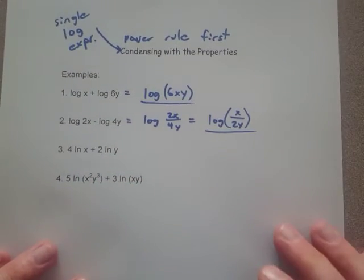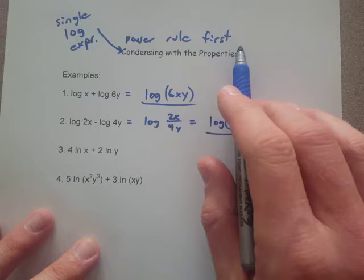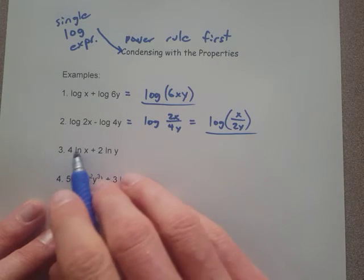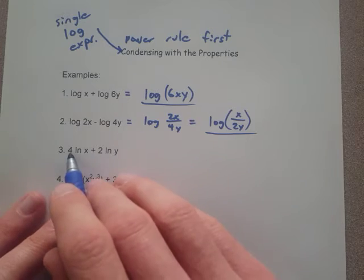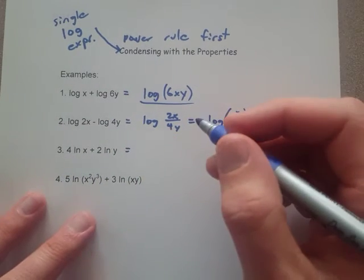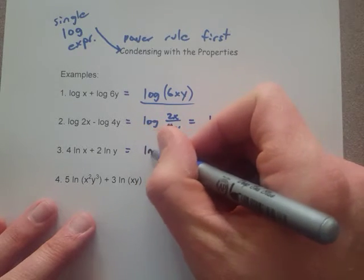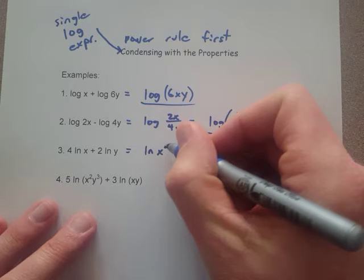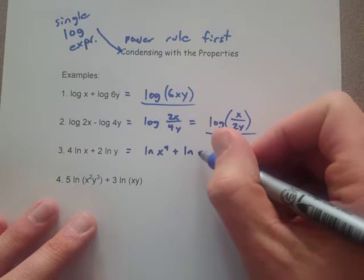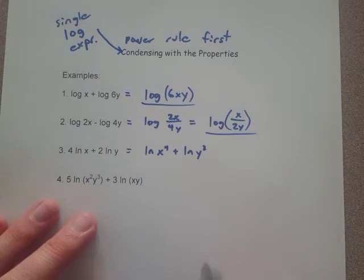Number 3. Again, use the power rule first. That's the key for condensing. So you'll notice that we've got a 4 and a 2 sitting out here in front. So we're going to put the 4 up on the x, we're going to put the 2 up on the y first. That's using the power rule first. So ln of x to the 4th plus ln y squared. We're moving those exponents up onto their results.